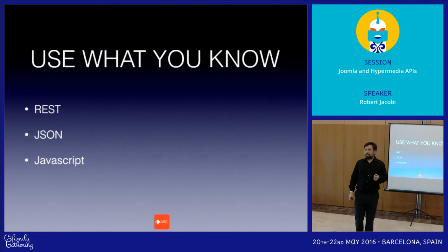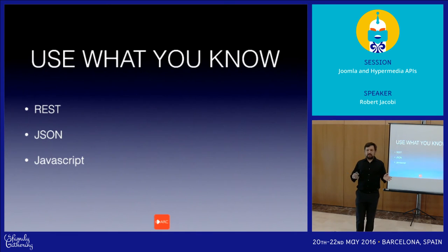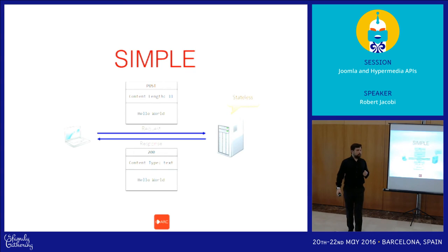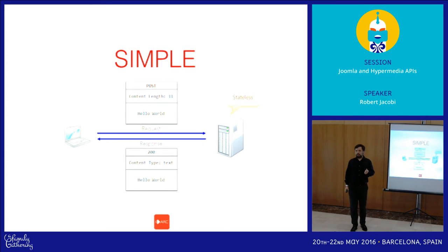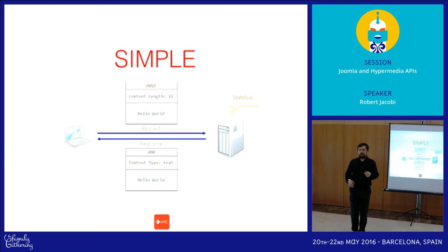Typically hypermedia today is very simple. We're using REST. We're using JSON. We're using JavaScript to make these calls and send information back and forth, and these things can be quite simple. You have a stateless server — basically any web server — just waiting for a request, something as simple as 'hello world,' and you always get a response. That's the key. Even if you don't want someone to look at that information, you give them a nice failure response. That communication is always bi-directional.